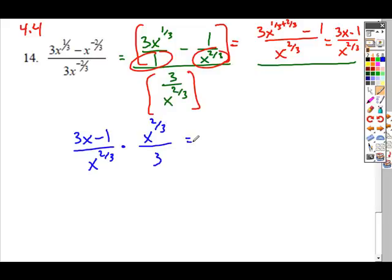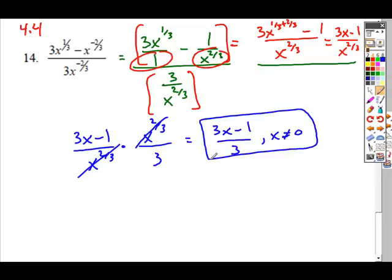And so now you're going to reduce this. The factors that cancel are here. You get 3x minus 1 over 3. Because we canceled a factor from the denominator, you do need to pay attention to it. It cannot equal 0, so you identify that as a domain restriction.